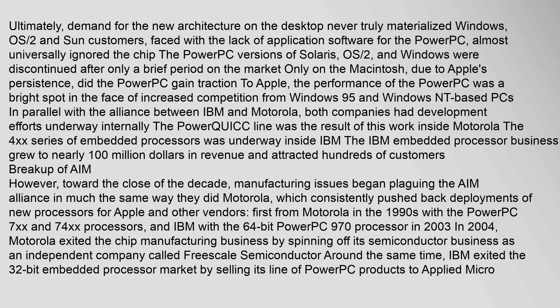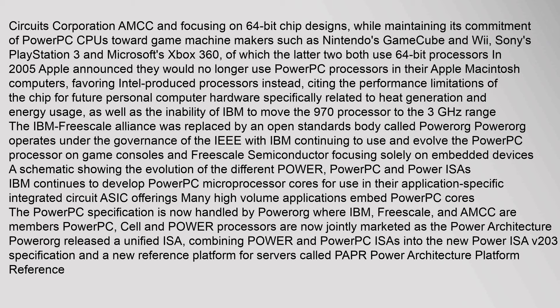Toward the close of the decade, manufacturing issues began plaguing the AIM Alliance, consistently pushing back deployments of new processors for Apple and other vendors — first from Motorola in the 1990s with the PowerPC 7XX and 74XX processors, and then IBM with the 64-bit PowerPC 970 processor in 2003. In 2004, Motorola exited the chip manufacturing business by spinning off its semiconductor business as an independent company called Freescale Semiconductor. Around the same time, IBM exited the 32-bit embedded processor market by selling its line of PowerPC products to Applied Micro Circuits Corporation (AMCC), focusing on 64-bit chip designs while maintaining its commitment to PowerPC CPUs for game machine makers such as Nintendo's GameCube and Wii, Sony's PlayStation 3, and Microsoft's Xbox 360.